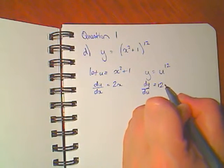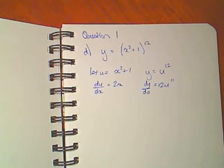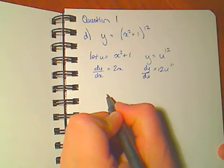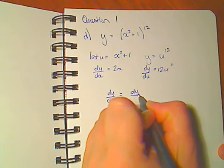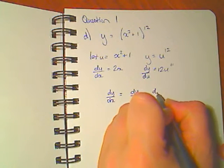And I use the power rule, I get 12u to the 11th. The chain rule says that dy/dx is equal to dy/du times du/dx.